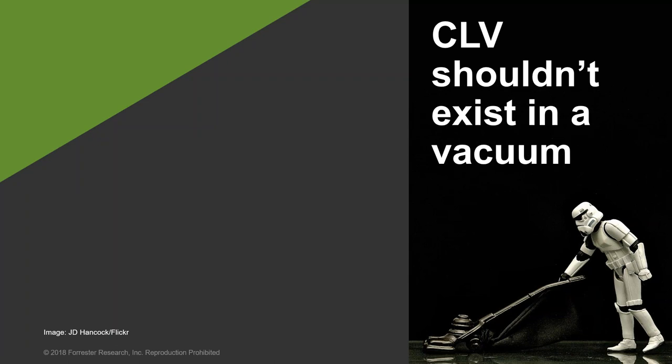A lot of folks think CLV should exist as a metric in a vacuum, but customer analytics techniques — CLV chief among them — are often used in conjunction with other techniques. One of the ways people use CLV is with churn propensity. Let's say you're predicting which customers are likely to churn and you have a thousand customers with a high likelihood of leaving, but you don't have resources to give all thousand an incentive to stay. Many companies cross-reference that churn score with lifetime value to prioritize which customers to spend money on retaining.